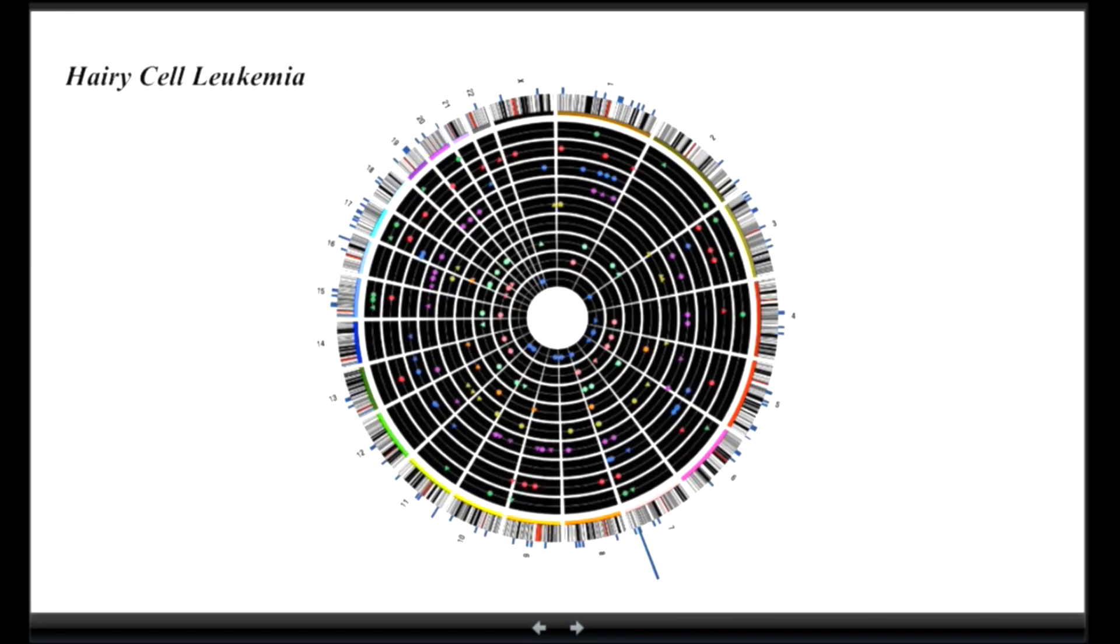And then here on the outside is representing the whole genome. So this is chromosome 1, chromosome 2, chromosome 3. I am not writing here the chromosome Y, but there are all the chromosomes here, except for the Y.